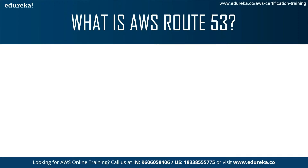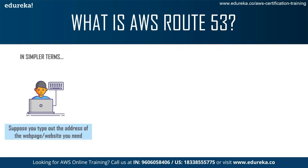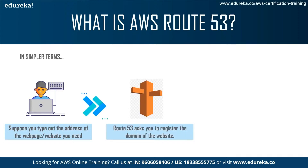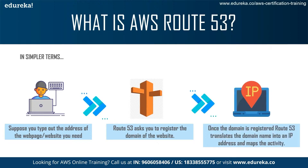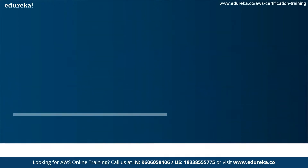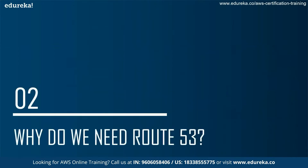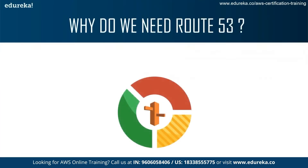In simpler terms, suppose you type out the address of a web page you need. What Route 53 does is ask you to register the domain of the website, and once you do that, Route 53 translates the domain name into an elastic IP address which can be accessed by the public.